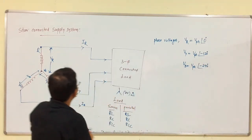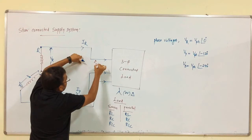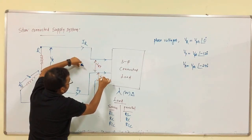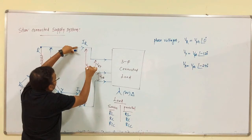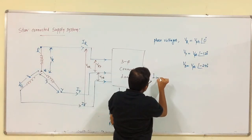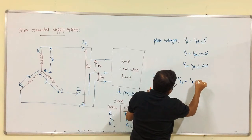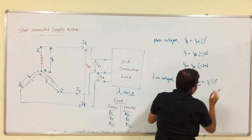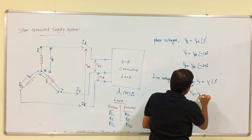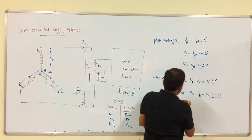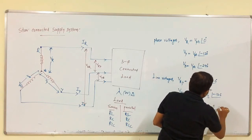Now, line voltages. Between lines R and Y, we have line voltage VRY. Between Y and B, we have VYB. Between B and R, we have VBR. The line voltages are: VRY = VR − VY = VL at 0°; VYB = VY − VB = VL at −120°; VBR = VB − VR = VL at −240°.